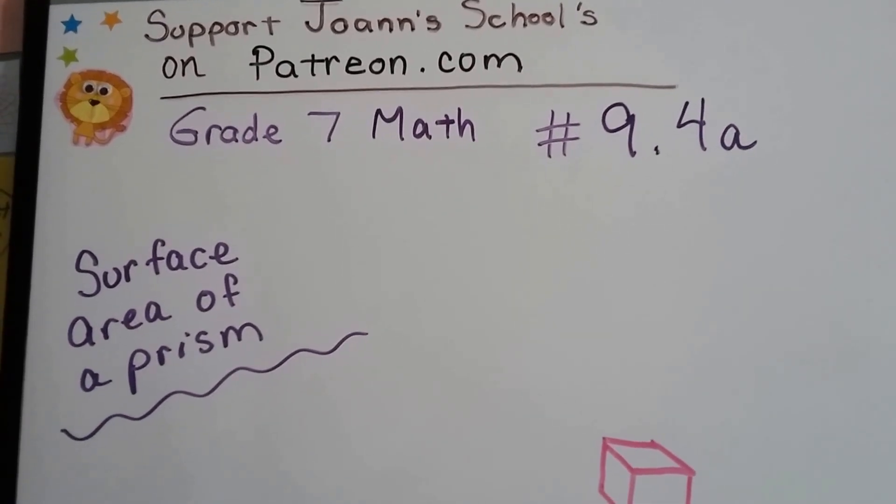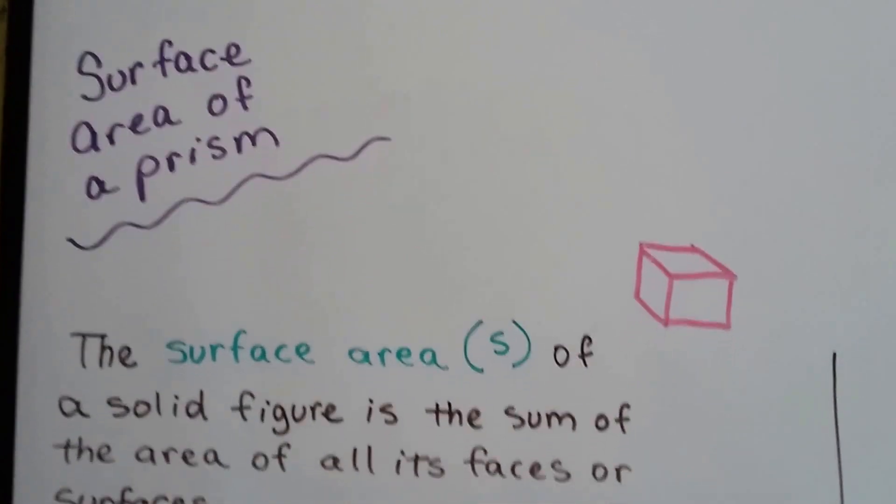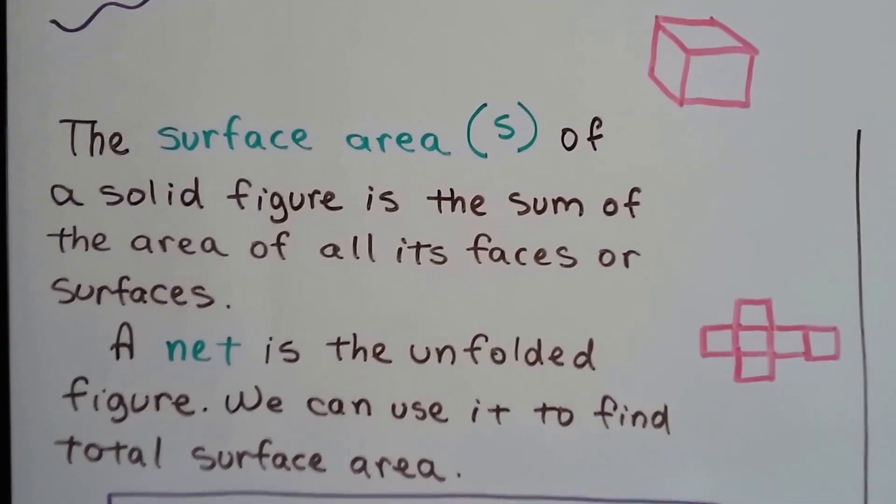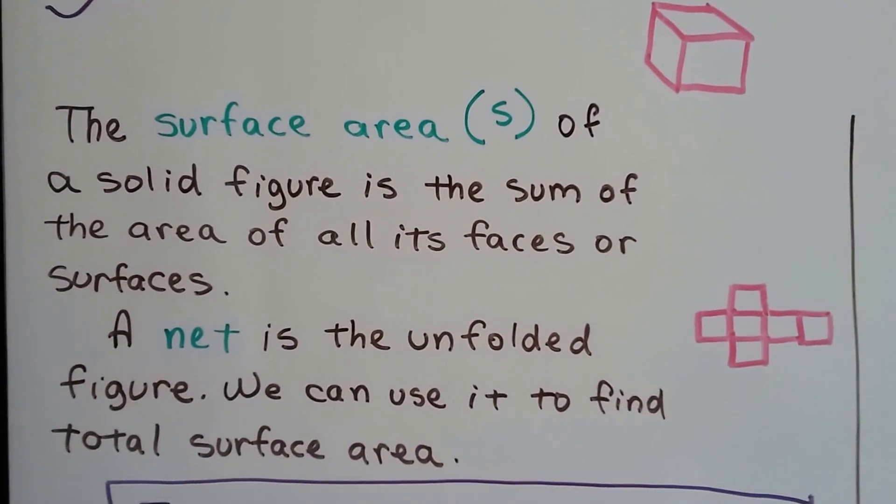Grade 7 math number 9.4a, surface area of a prism. The surface area, S, of a solid figure is the sum of the area of all its faces or surfaces.